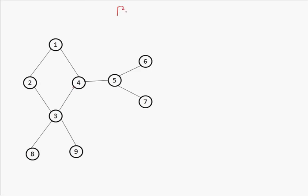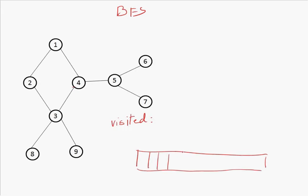Let us talk about breadth first search. The order in which the vertices are visited, I am going to write them here. And I need one data structure. For traversing, I can pick up any vertex as a starting vertex. Here I prefer taking vertex 1 as the starting vertex. So one is visited, and that visited vertex I will keep here in this data structure.